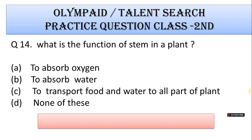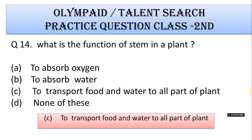Number 14: What is the function of the stem in a plant? A. To absorb oxygen, B. To absorb water, C. To transport food and water to all parts of the plant, D. None of these. Correct answer is Option C. To transport food and water to all parts of the plant.